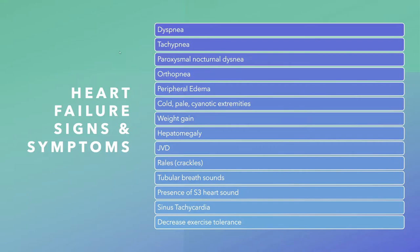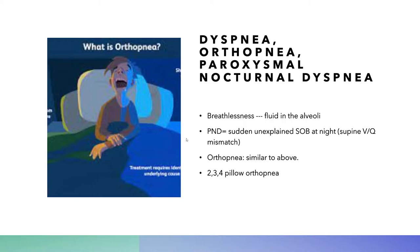Now let's get into signs and symptoms. A very common one is dyspnea — difficulty breathing — orthopnea, which is difficulty breathing while laying down, or paroxysmal nocturnal dyspnea. In the case of left-sided heart failure, dyspnea is due to fluid in the alveoli making gas exchange very ineffective. PND, or paroxysmal nocturnal dyspnea, is like orthopnea except that orthopnea is immediate — as soon as you lay down someone has difficulty breathing. With PND you go to bed generally okay, but then have shortness of breath at night.